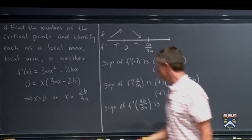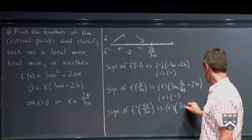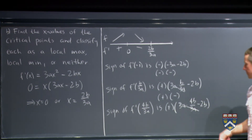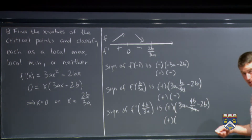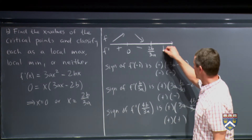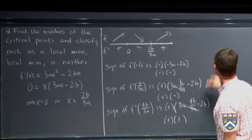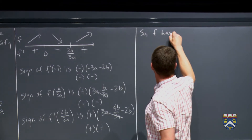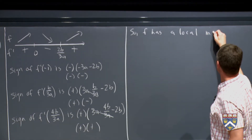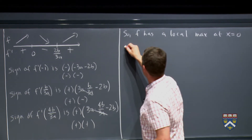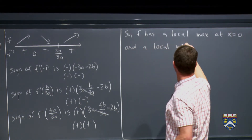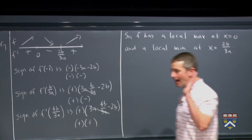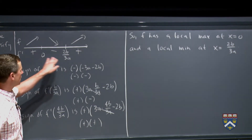Plugging 4b/3a into the factored derivative: x is positive, and 3a·(4b/3a) − 2b = 4b − 2b = 2b, which is positive since b is positive. So we get positive times positive — f prime is positive, meaning f is increasing to the right of 2b/3a. Therefore, f has a local max at x = 0 and a local min at x = 2b/3a. Every member of this family always has a local max at 0 and a local min at 2b over 3a.